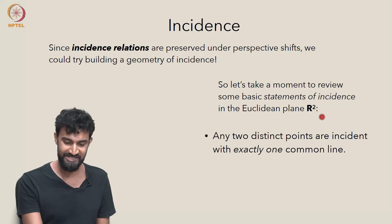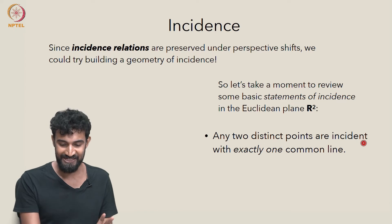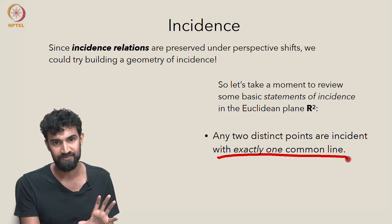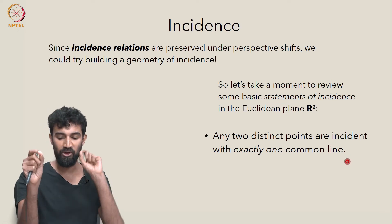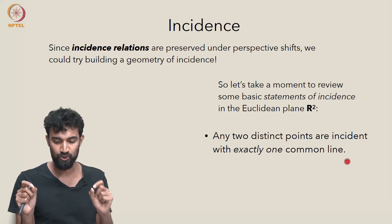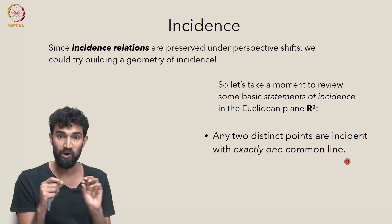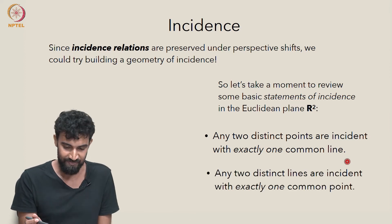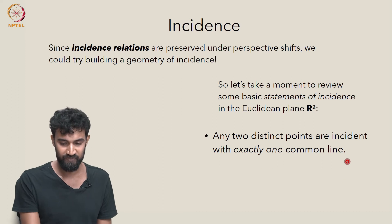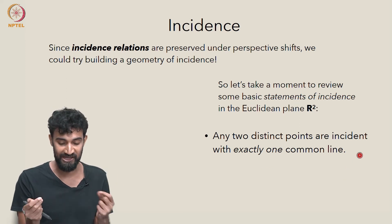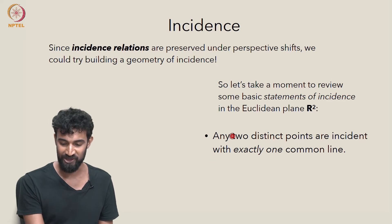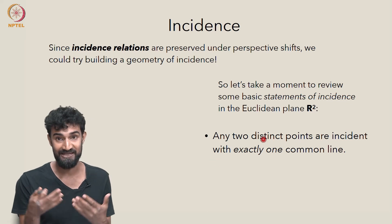Here's a statement of incidence: any two distinct points are incident with exactly one common line. Any two distinct points in R2 are incident with exactly one common line — they determine a unique line. That's true in R2: any two points determine a unique line. This is a true statement of incidence involving points, lines, and incidence relations.